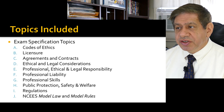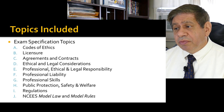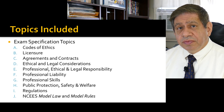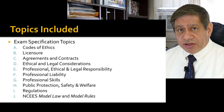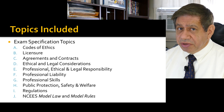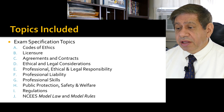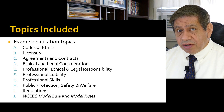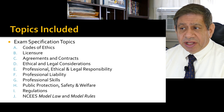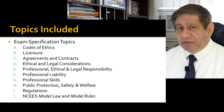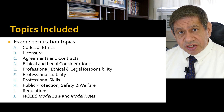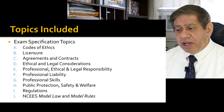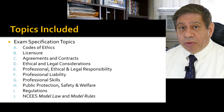The topics included in this section of my course cover all the components you may see during the test, which include: the code of ethics, licensure itself, agreements and contracts, ethical and legal considerations, professional ethical and legal responsibility, professional liability, professional skills, public protection, safety and welfare — which should actually be at the top of the list — and then regulations. Every different specific discipline has different regulations, and then finally the NCEES modal law and modal rules.